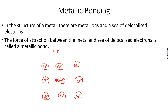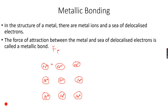In the simple structure I've drawn, we have around nine ions. Nine ions means that 9 multiplied by 2 is 18, so a total of 18 electrons were lost by the iron atoms.